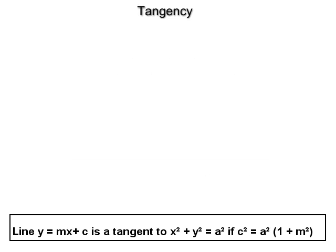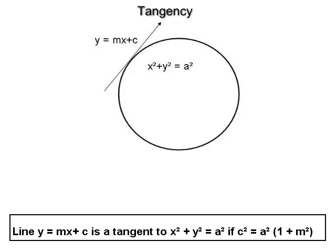(2) The line y = mx + c is tangent to the standard circle x² + y² = a² if c² = a²(1 + m²), that is, c = ±a√(1 + m²). Thus there are two tangents having slope m to the standard circle, with equations y = mx ± a√(1 + m²). The point of contact is (−a²m/c, a²/c), where c = ±a√(1 + m²).